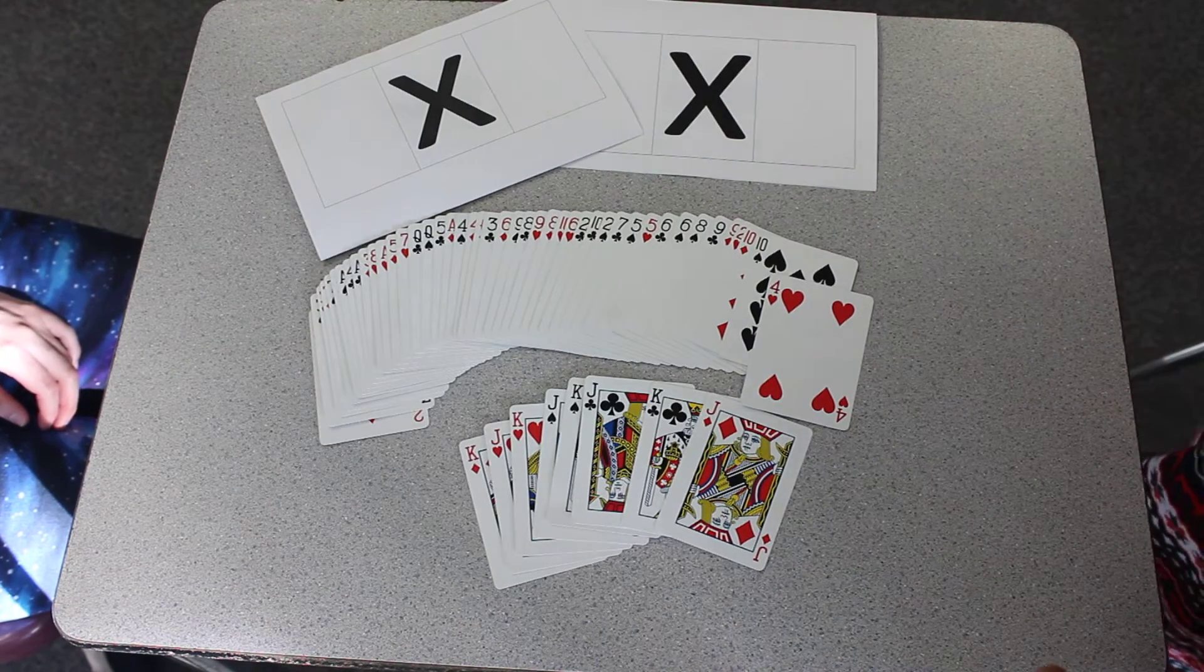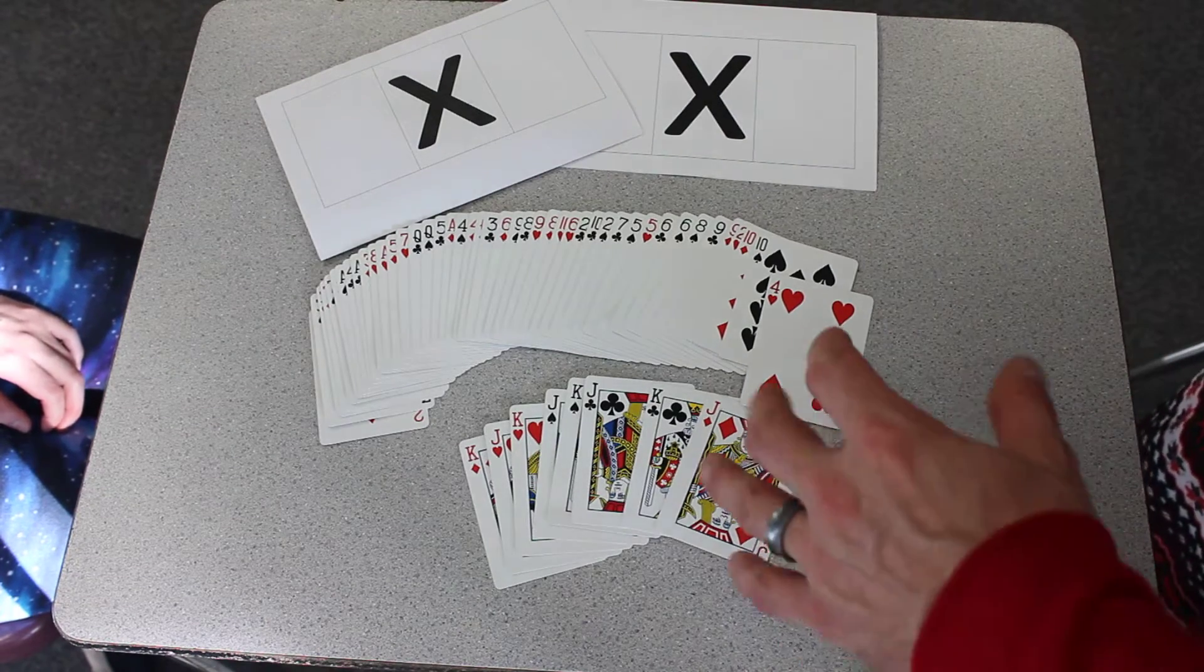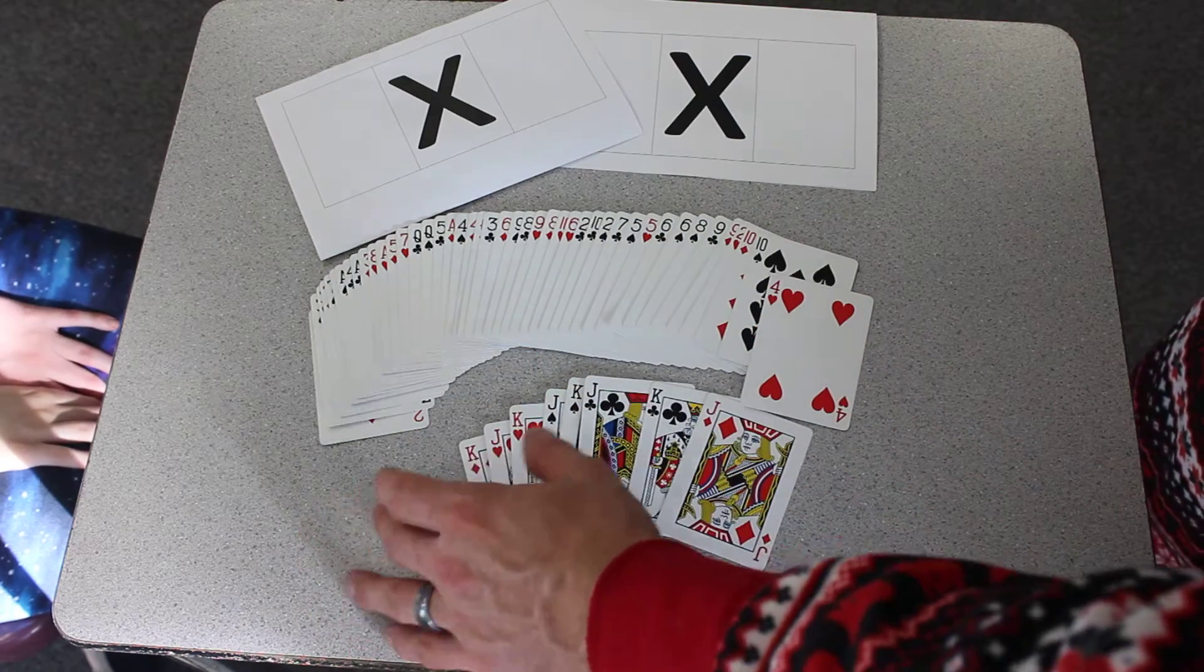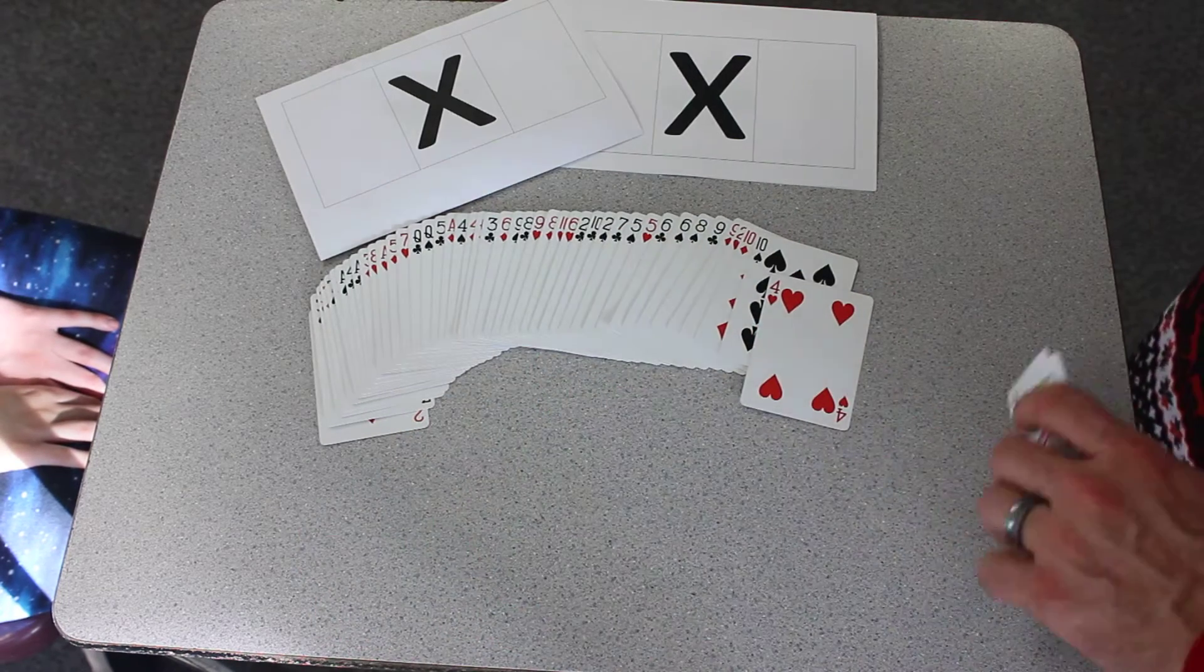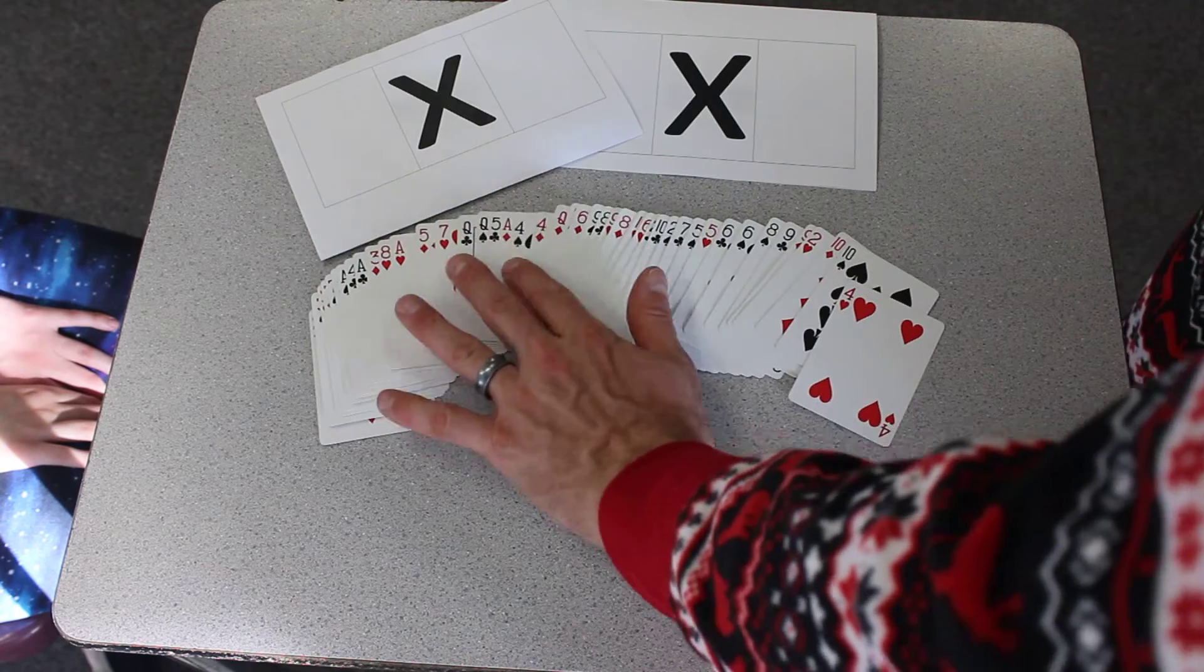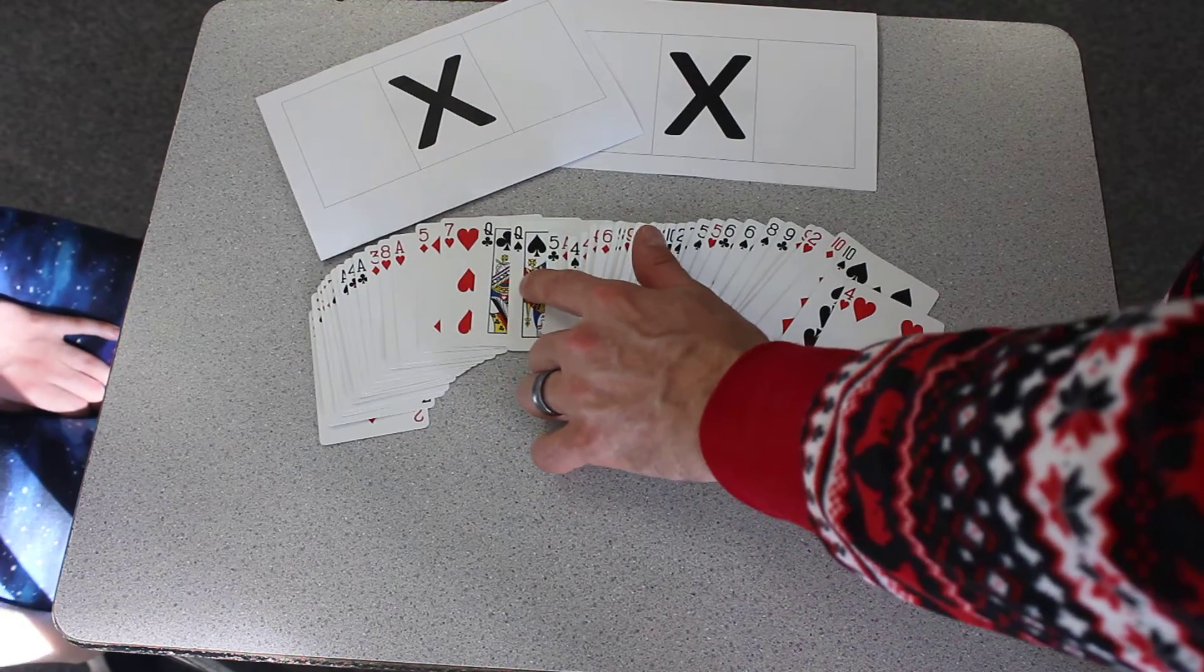This is a multiplication game, a war type game with a regular deck of cards. Removing the jacks and the kings, I leave the queens in and they represent zero.